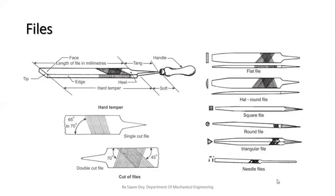The needle file is 150 mm long with double cut, and is used for filing corners, grooves, narrow slots, etc. The term 'cut' refers to single cut and double cut files. Through this picture we can see two types of cuts — single cut and double cut — where the angles are different. In the case of single cut, the angle of the cut is 65 to 70 degrees.